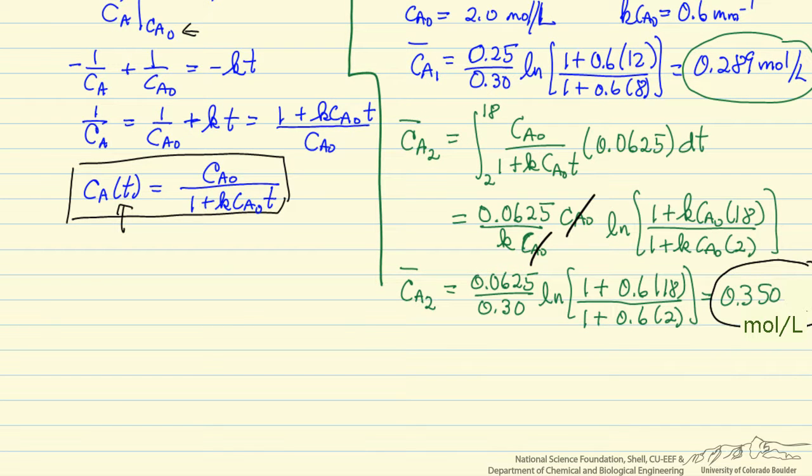and we can see that CA2 is larger than CA1. We have more reactant A leaving the second reactor, so that means less has been converted. So conversion for 2 is less than the conversion for 1, so reactor 1 has the higher conversion.